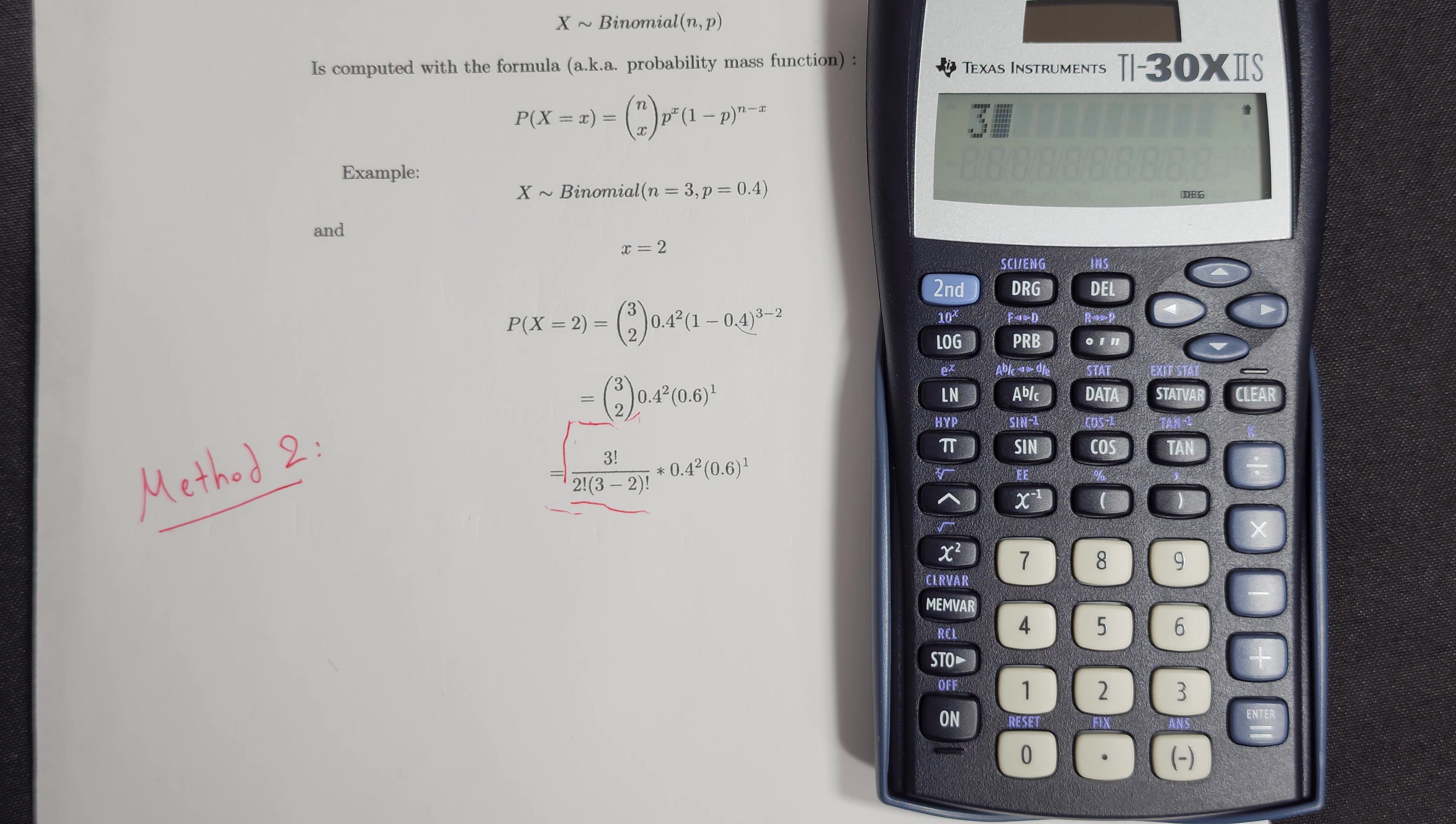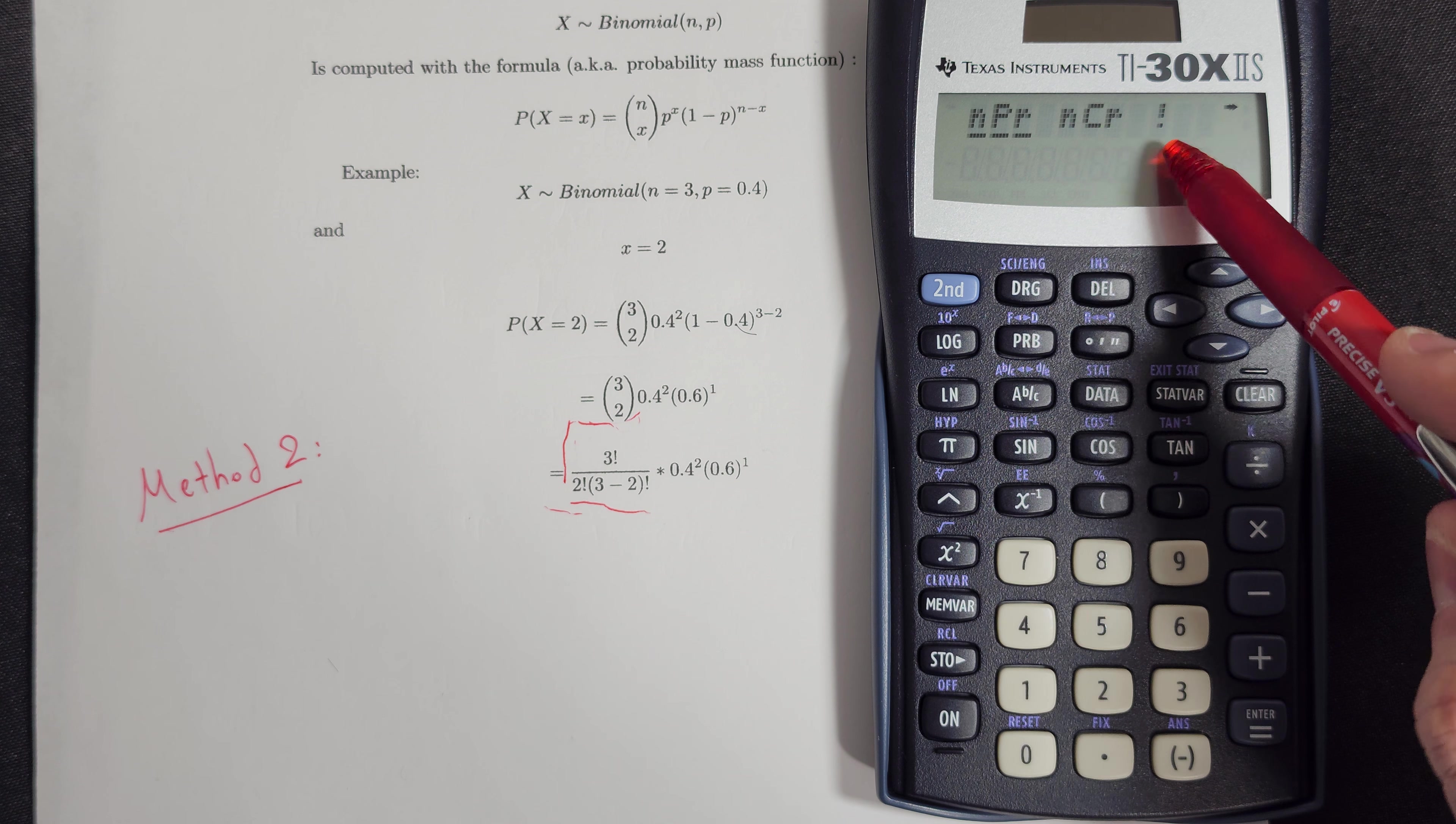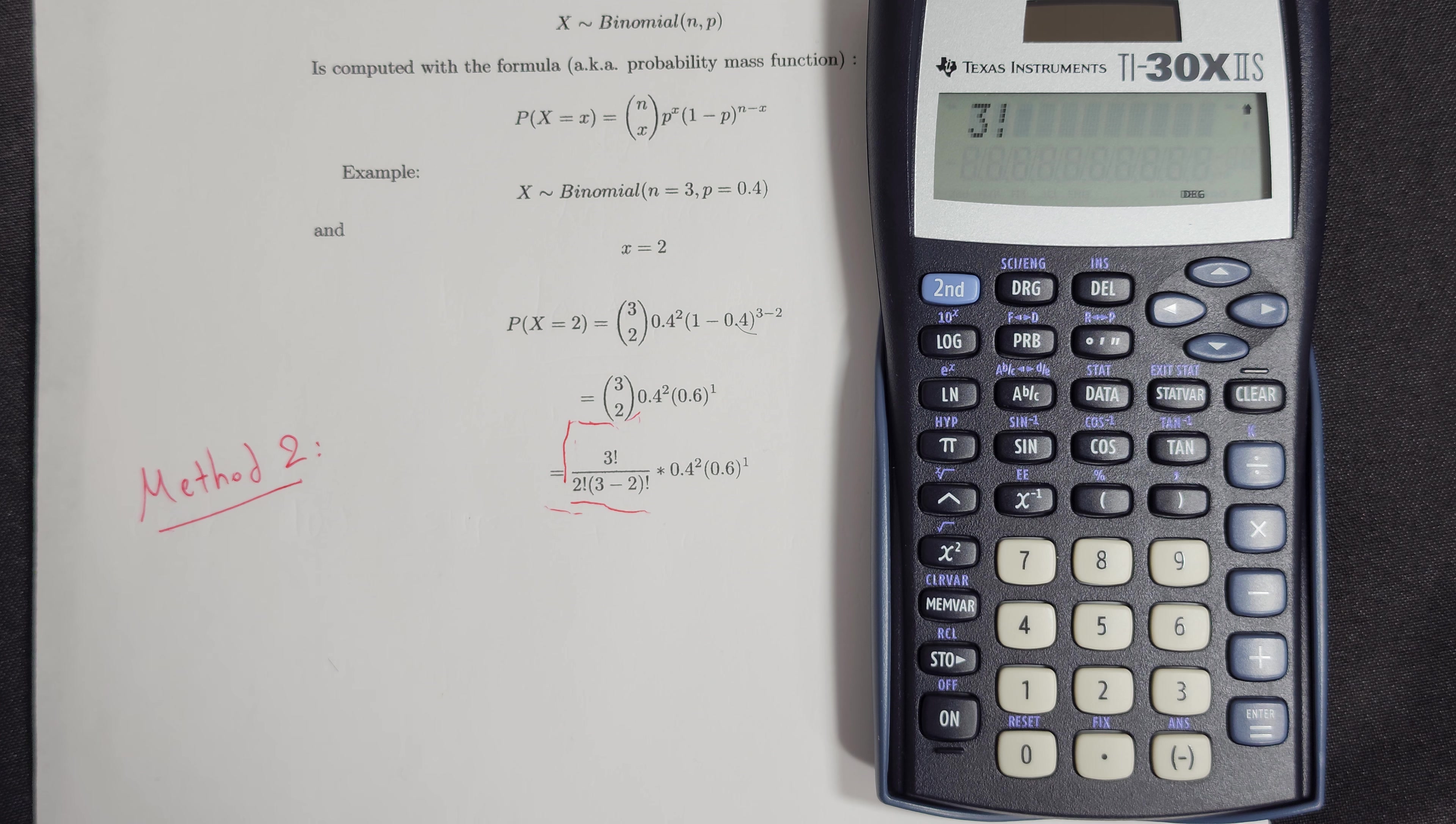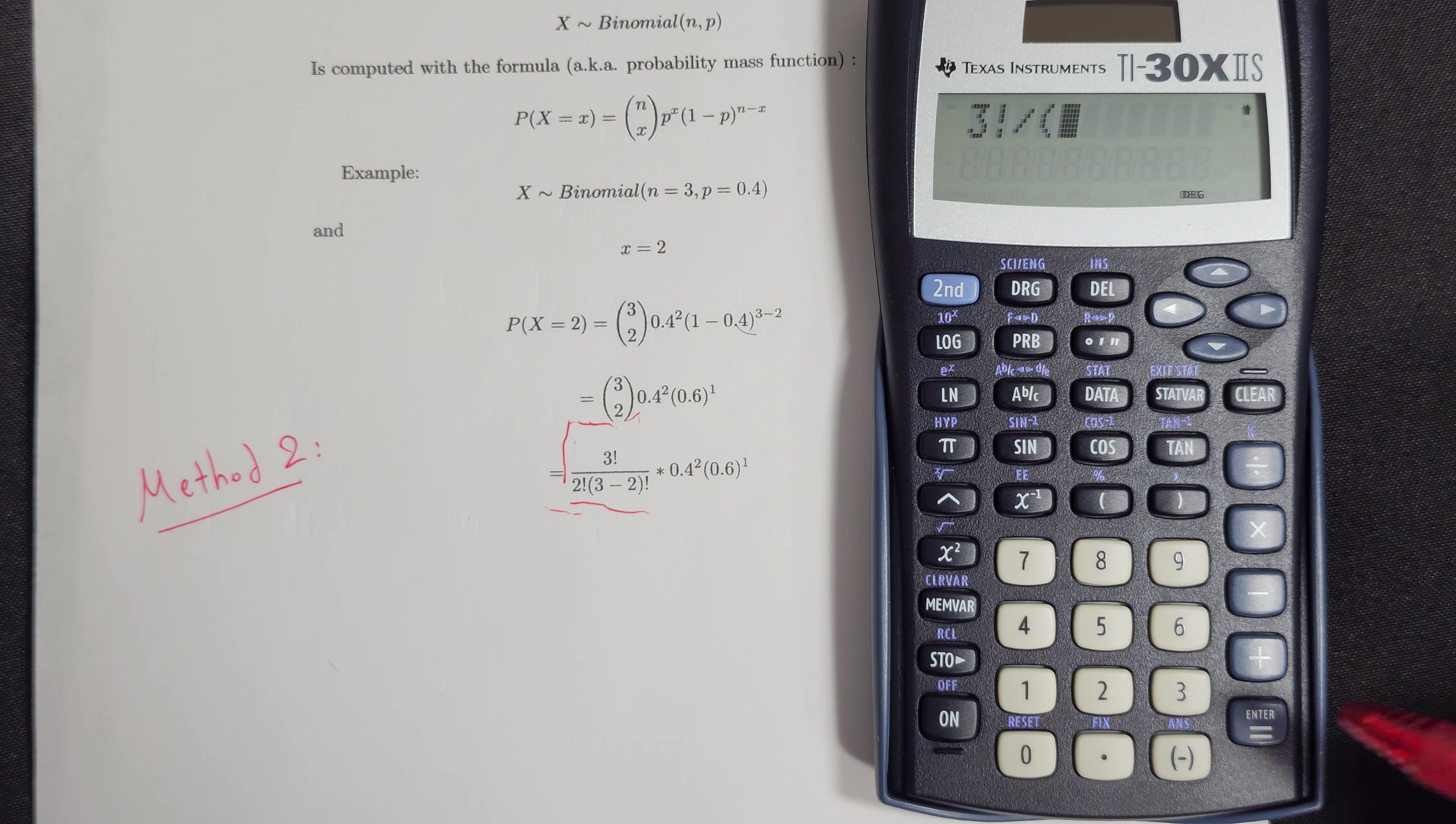Then in order to go and find the factorials, we should press this PRB button again, PRB. And then the third thing is the factorial. So we go right this time and choose the factorial symbol and press enter. So we have the 3 factorial which is the numerator, and then we divide by, and we can put the parenthesis if we want.